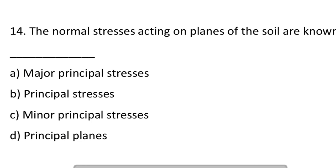Next question: the normal stresses acting on the plane of the soil are known as. Option A: major principal stress. Option B: principal stresses. Option C: minor principal stresses. Option D: principal planes. So the answer is A, major principal stresses.